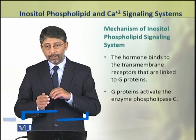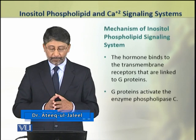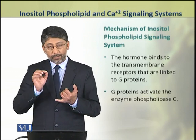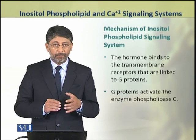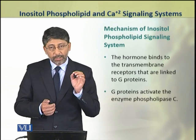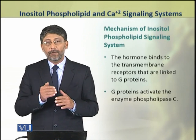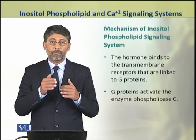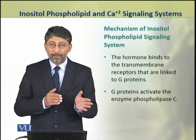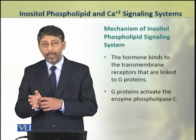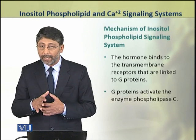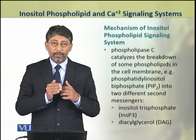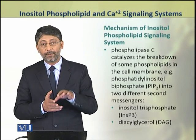The hormone binds to the transmembrane receptor which is linked to the G-protein. The G-protein activates an enzyme called Phospholipase-C. This is where the inositol phospholipid signaling pathway separates from the cAMP pathway, where the G-protein instead activates adenylate cyclase.